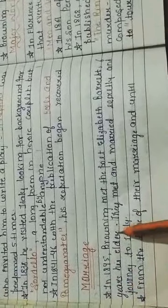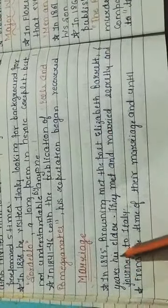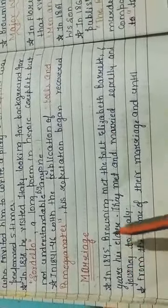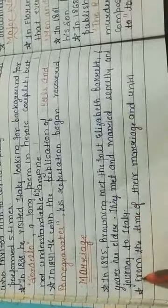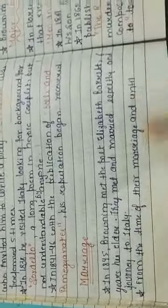In 1845, Browning met the poet Elizabeth Barrett, who was six years older than him. They met and married secretly and journeyed to Italy. From the time of their marriage until Elizabeth's death, Browning lived in Italy, residing first in Pisa and then in Florence at Casa Guidi. Their only child was Robert Wiedemann Barrett Browning, nicknamed Pen.